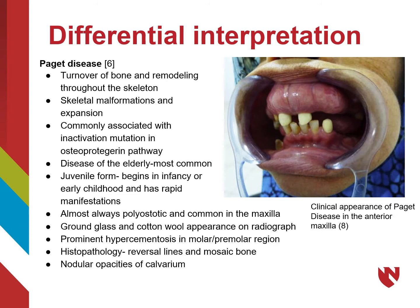Paget's disease is a disease associated with an inactivation mutation in the osteoprotegerin pathway. This leads to turnover of bone and expansion, much like fibrous dysplasia. Paget's disease is polyostatic and affects many areas at once. It shares a similar ground glass appearance that fibrous dysplasia presents with. Unlike fibrous dysplasia, Paget's nodular opacities of the calvarium and mosaic bone in histology are pathognomonic features. It is commonly found in the elderly, although a juvenile form can occur. Paget's disease is typically found in older age individuals, differentiating it from fibrous dysplasia which is in the young age groups.